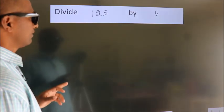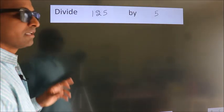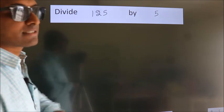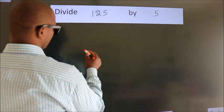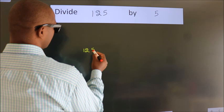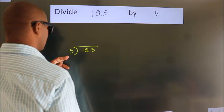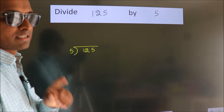Divide 125 by 5. To do this division we should frame it in this way. 125 here, 5 here. This is your step 1.